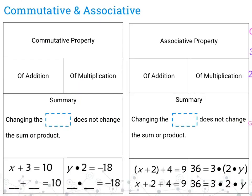First, we've got to talk about the commutative property. The commutative property can be of addition or multiplication. A summary of it is: changing the order does not change the sum or the product. So for example, x plus 3 equals 10, and the same thing is true if I have 3 plus x equaling 10 — the order does not matter. Same with multiplication: y times 2 equals negative 18, and 2 times y equals negative 18.